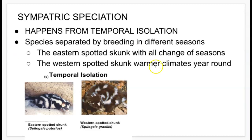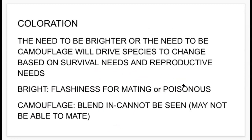Here you can see an example of the eastern spotted skunk and the western spotted skunk. When talking about reproduction and sexual selection, a huge factor is coloration. The need to be brighter or camouflaged will drive species to change based on survival needs and reproductive needs.